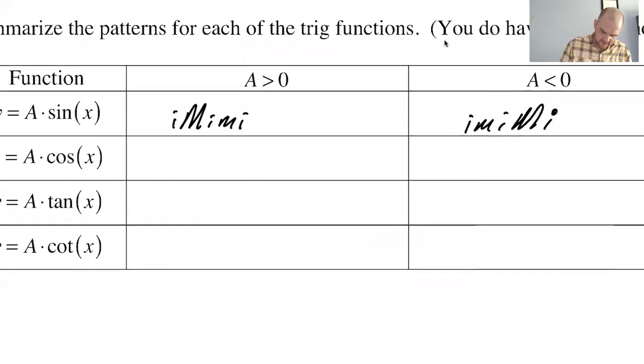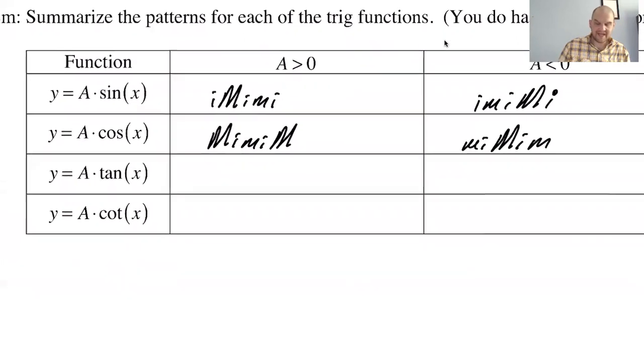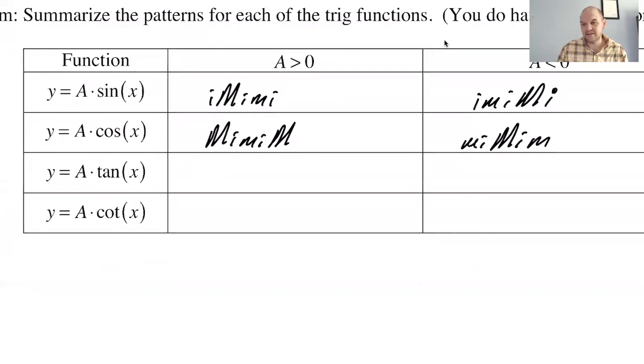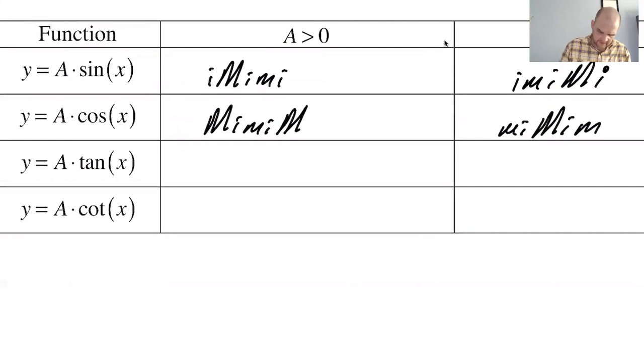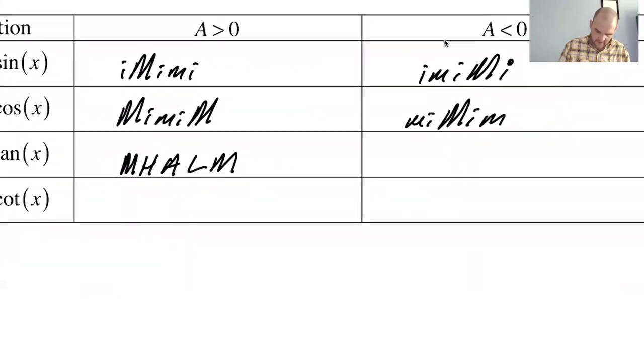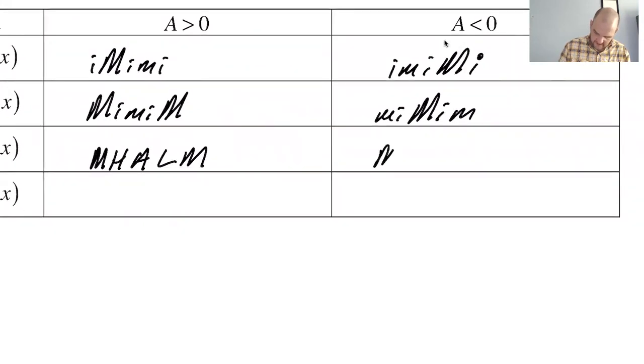Now cosine starts at a maximum like that. And then it'll switch. These patterns kind of look like the function, not totally, but kind of. So it's kind of helpful. This will be middle, high, asymptote, low, middle. And then all that switches with a negative is highs and lows.